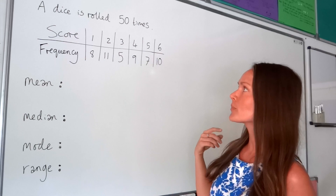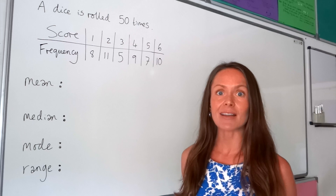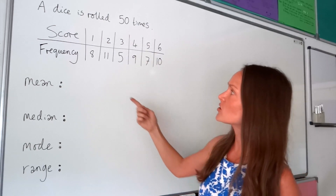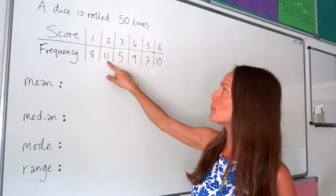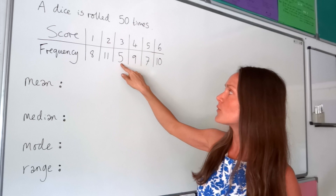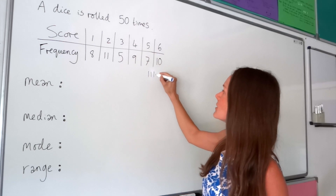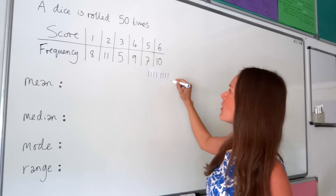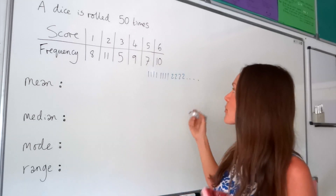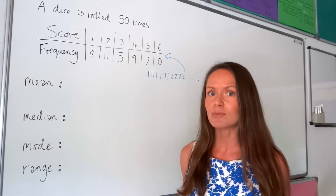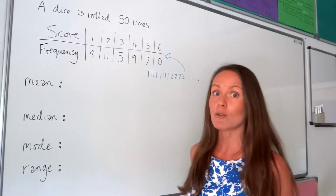In this example, we have a dice and we roll it 50 times, and the scores are recorded in a table. The number one appeared eight times, the number two appeared 11 times, the number three appeared five times, and so on. If you were writing all these numbers out, it would be like saying there are eight number ones, eleven number twos — which is why we use a frequency table to make our life easier and reduce mistakes.